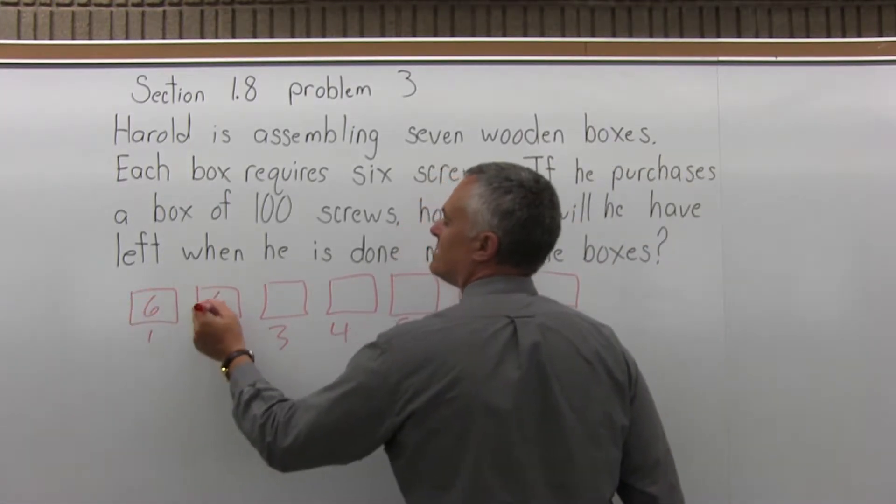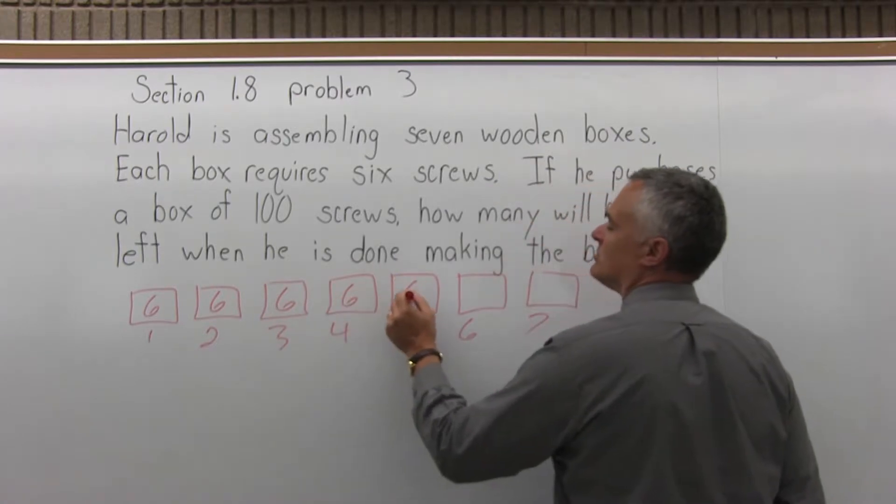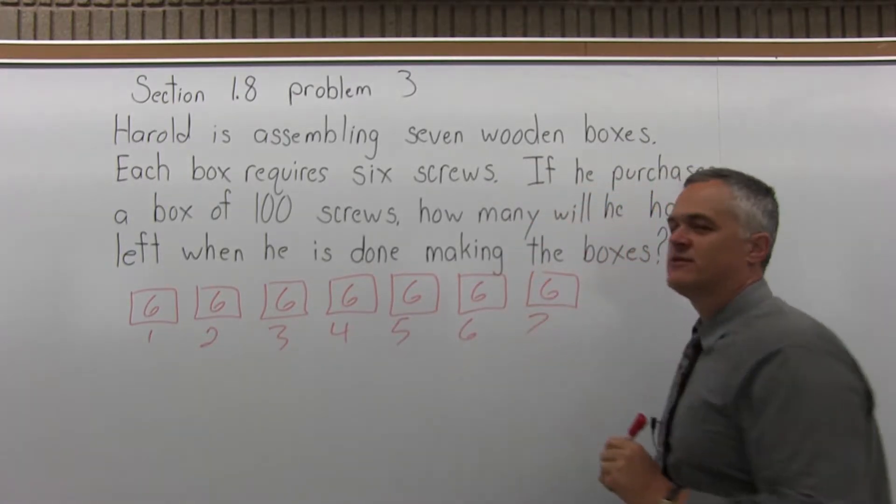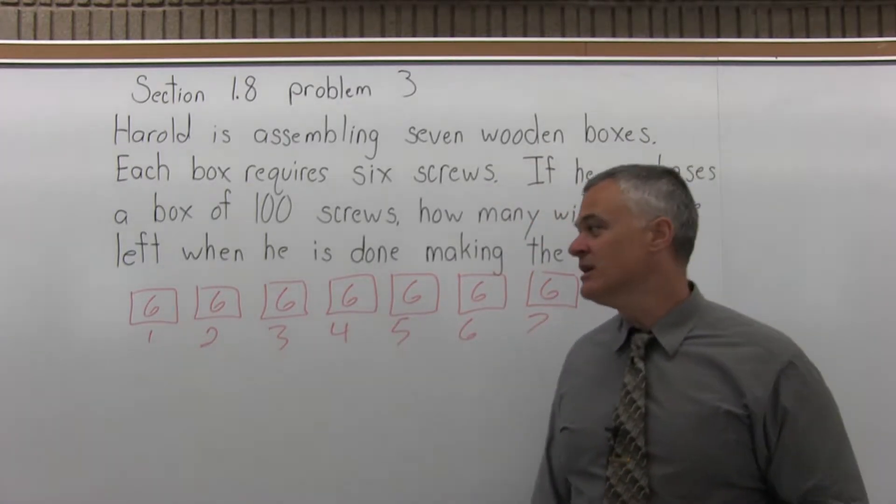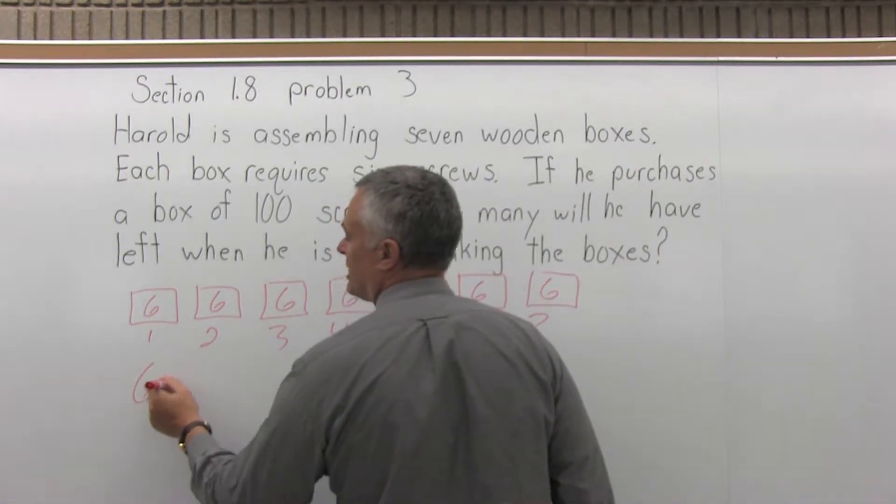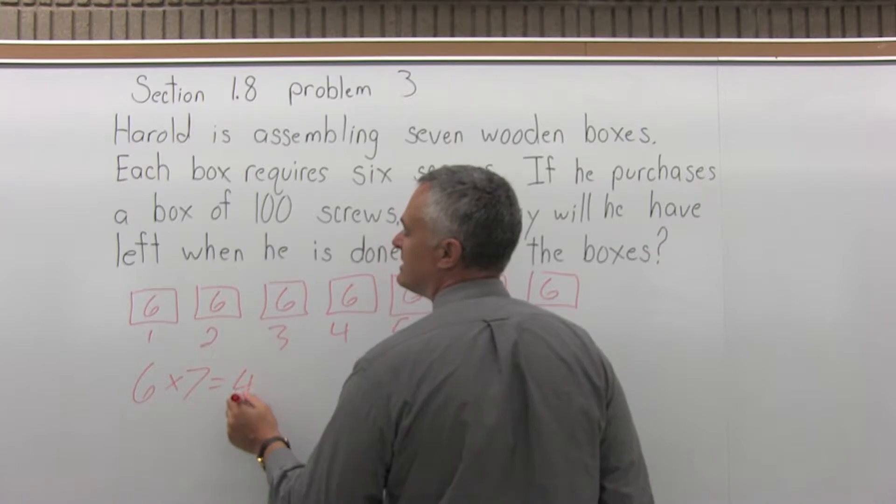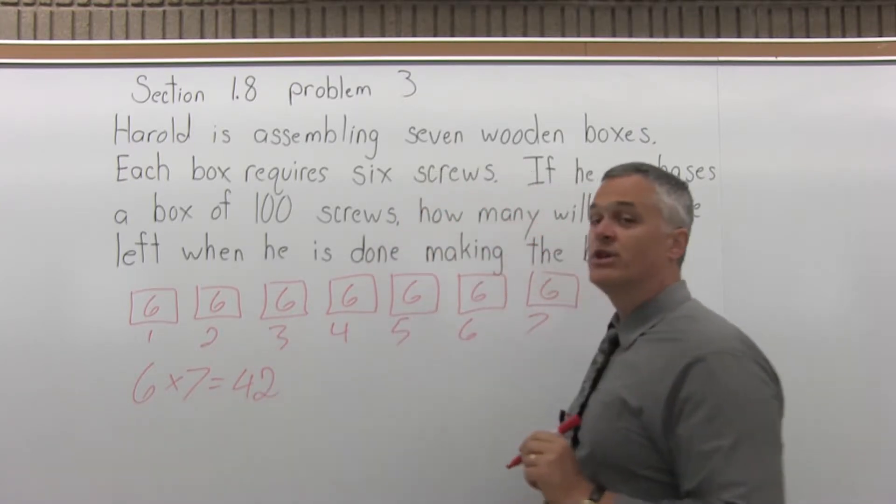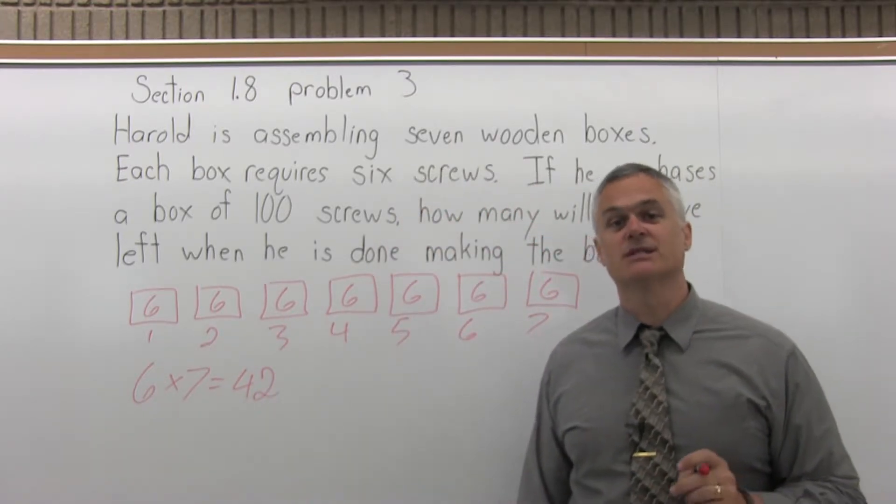Each one of those seven boxes requires six screws. So first, let's figure out how many screws he is going to need. So this is a multiplication problem. Six screws for each box times seven boxes means he will need to use 42 screws to assemble the wooden boxes that he is making.